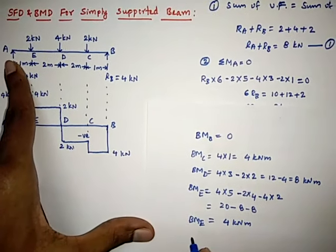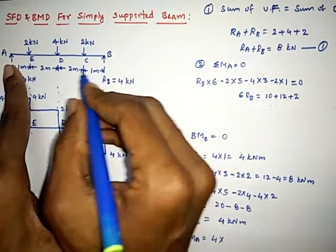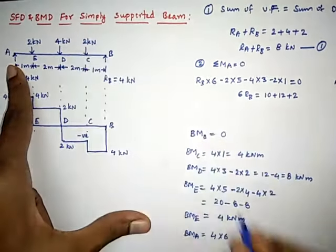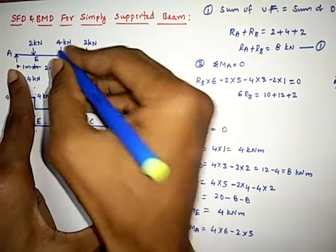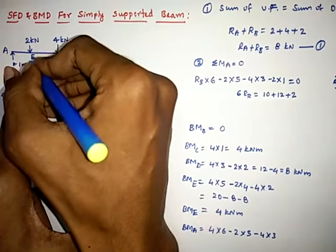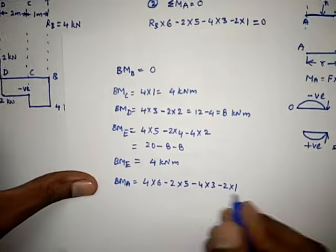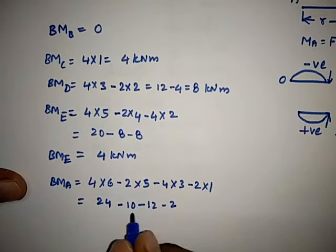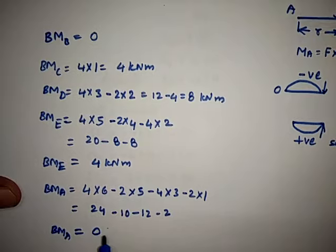Bending moment at A: +4 × 6 = 24, minus 2 × 5 = 10, minus 4 × 3 = 12, minus 2 × 1 = 2. So BM at A = 24 − 10 − 12 − 2 = 0. The bending moment is zero at both supports A and B, as expected for a simply supported beam.